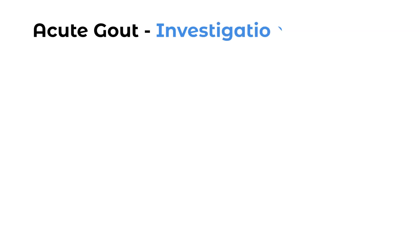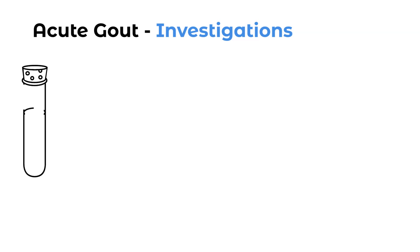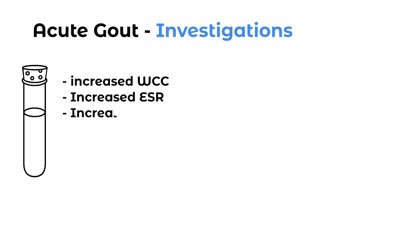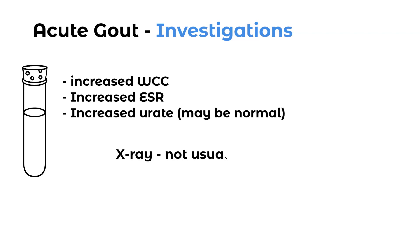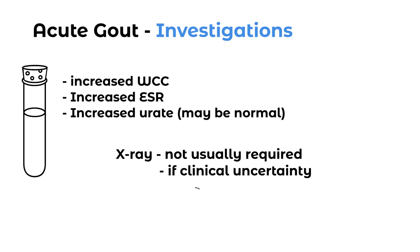Now let's move on to investigations. There isn't really much investigating to do when it comes to gout, but let's go over a few. Blood tests are generally the first thing we do, and here we'll find an increased white cell count, an increased ESR or sedimentation rate, and increased urate — although this may be normal, so just be mindful of this. Blood tests will also come in handy in the future if we start preventative or prophylactic medication.